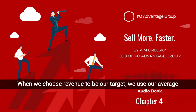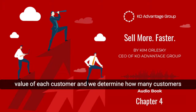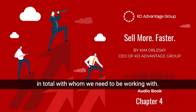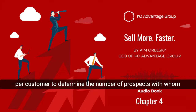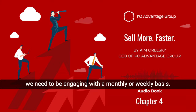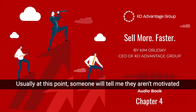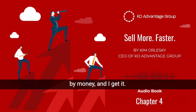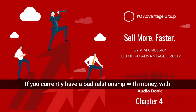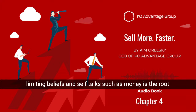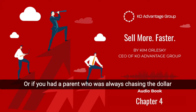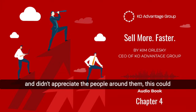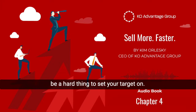When we choose revenue to be our target, we use our average value of each customer and determine how many customers in total we need to be working with. From there, we can use Sales 101 standard metrics of 10 prospects per customer to determine the number of prospects with whom we need to be engaging on a monthly or weekly basis. Usually at this point, someone will tell me they aren't motivated by money. And I get it. If you currently have a bad relationship with money — with limiting beliefs and self-talk such as 'money is the root of all evil' — or if you had a parent who was always chasing the dollar and didn't appreciate the people around them, this could be a hard thing to set your target on.